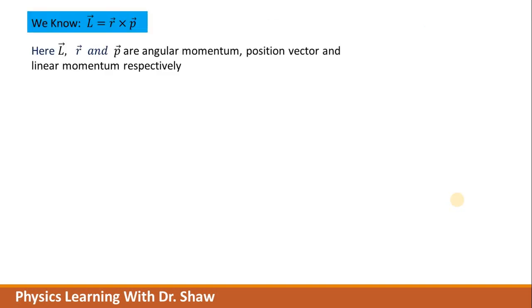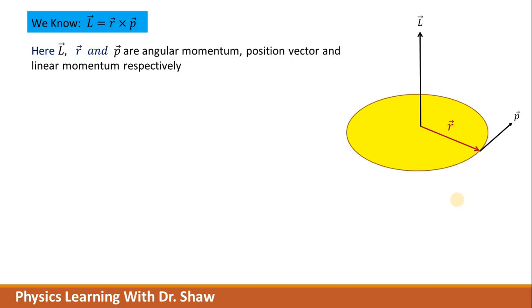We know angular momentum vector L is equal to R cross P, where R is position vector and P is linear momentum vector. If you just take the time derivative of this L vector, then we will get dL/dt equals R cross dP/dt plus dr/dt cross P.